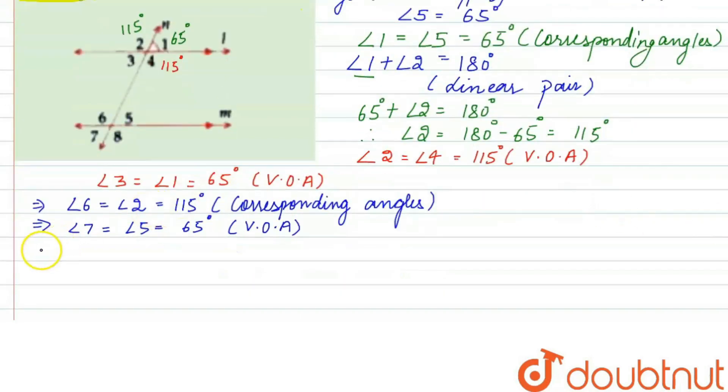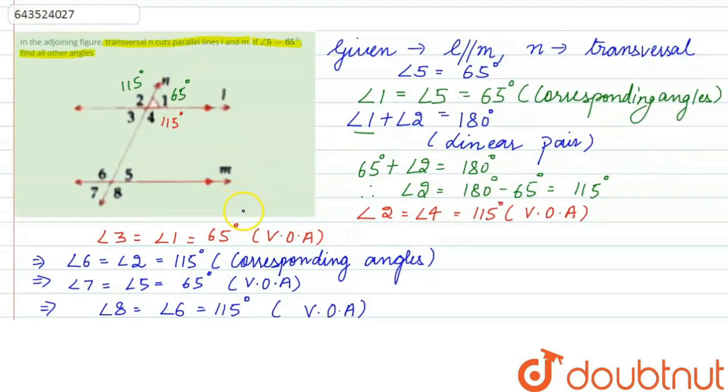Similarly, angle 8 equals angle 6, which is 115 degrees, because these are vertically opposite angles. Therefore, we have found the values of all the angles. I hope this question is clear to you. Thank you.